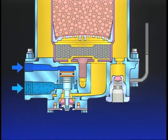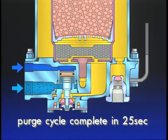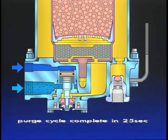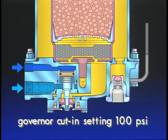The entire purge cycle is complete in about 25 seconds. The purge valve will remain open until air brake system pressure is reduced to the governor cut-in setting of 100 PSI.